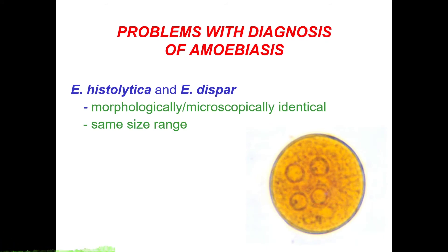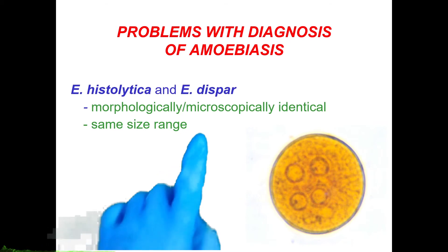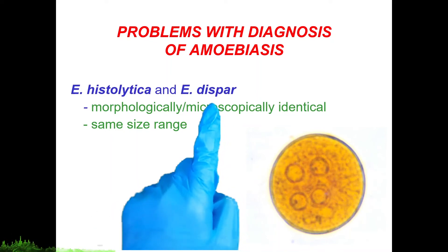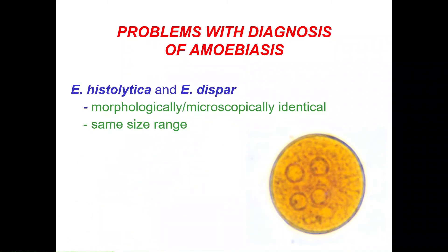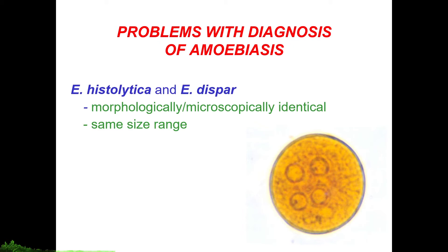The main problem in diagnosis of amoebiasis is that Entamoeba histolytica is morphologically and microscopically identical to a non-pathogenic intestinal protozoan called Entamoeba dispar. You always have to differentiate Entamoeba histolytica from Entamoeba dispar. While direct examination cannot differentiate them, recent molecular techniques establish them as two different species, with Entamoeba dispar being termed a commensal and Entamoeba histolytica being pathogenic. Many individuals with Entamoeba infections are also colonized with Entamoeba dispar, which appears to be around 10 times more common.